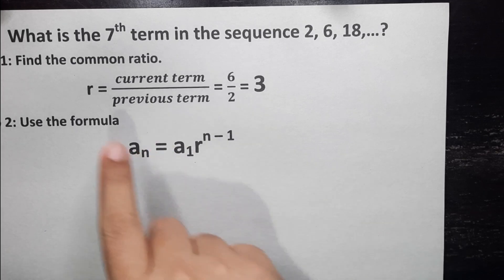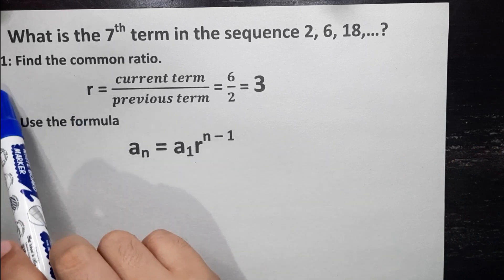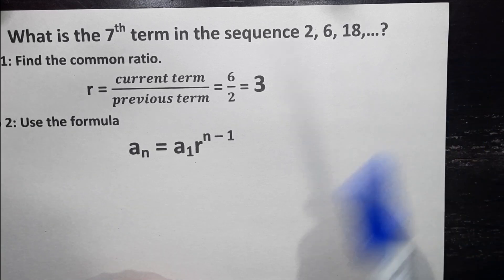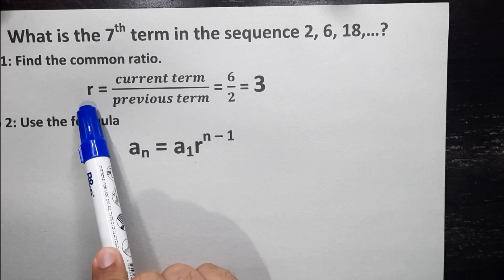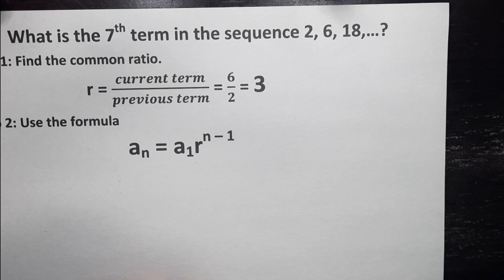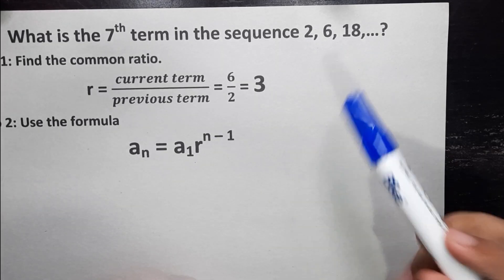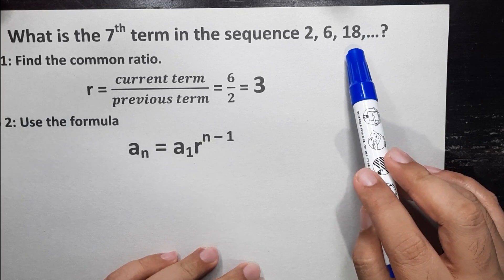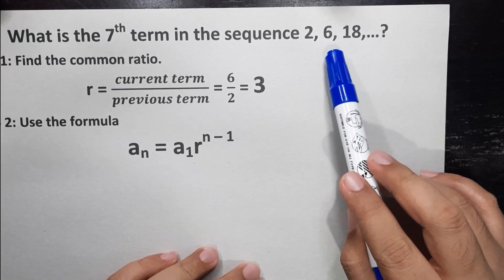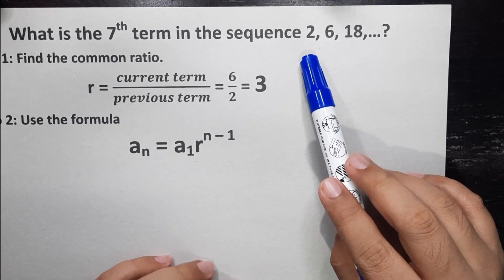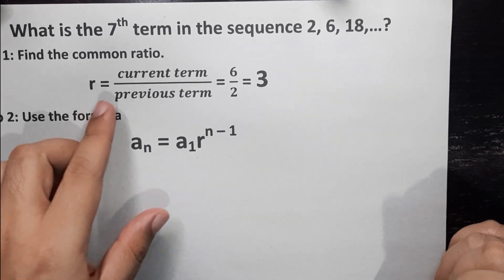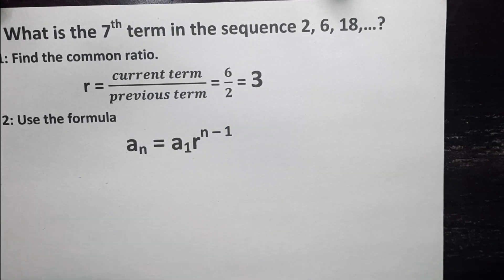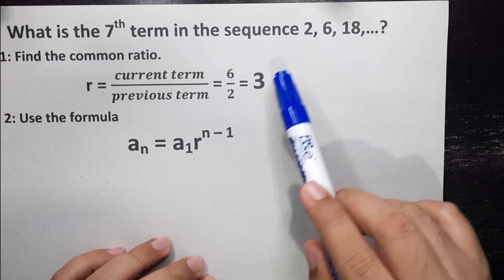To solve this, step 1 is to find the common ratio so we can substitute it into the formula. The common ratio r is equal to the current term divided by the previous term. Using 6 as the current term and 2 as the previous term, 6 divided by 2 gives us a common ratio of 3. We can verify: 2 times 3 is 6, times 3 is 18.